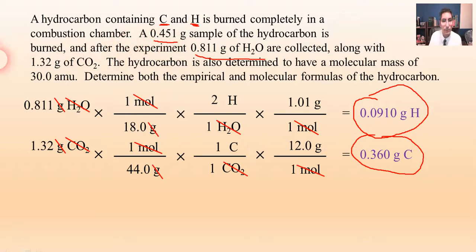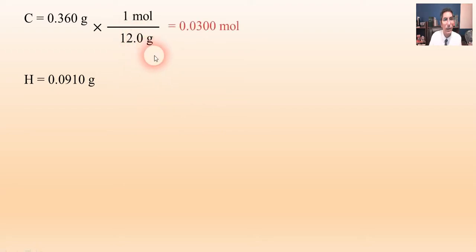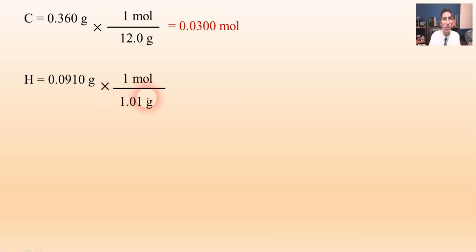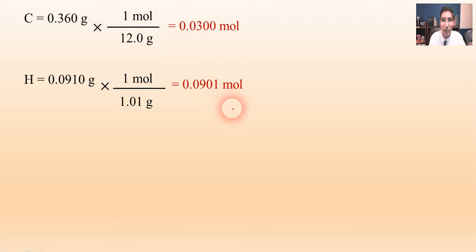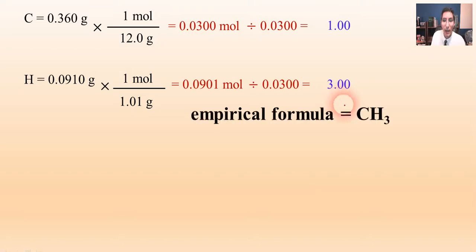Now we're ready to find the empirical formula. We have 0.360 grams of C and 0.0910 grams of H. Step one: convert to moles — for carbon, divide by 12 g/mol to get 0.03 moles; for hydrogen, divide by 1.01 g/mol to get about 0.0901 moles. Step two: divide both by the smallest value, 0.03 — carbon gives 1, hydrogen gives 3. So the empirical formula is CH3.